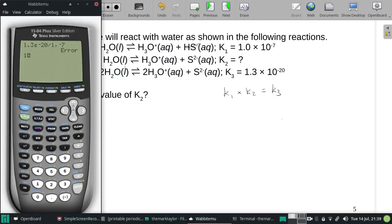So let me clear out my calculator here. So 1.3 times 10 to the negative 20th divided by 1.0 times 10 to the negative 7th. And we get an answer of 1.3 times 10 to the negative 13th.